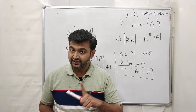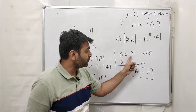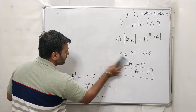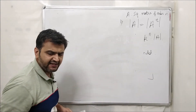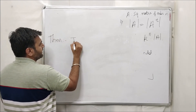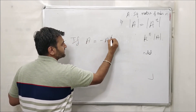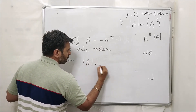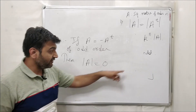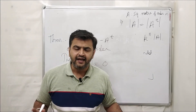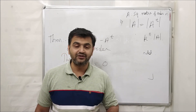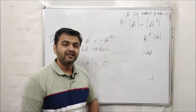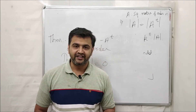This explains the example at the start: it was a skew-symmetric matrix of order 5, which is odd, so its determinant is zero. The theorem states: if A is a skew-symmetric matrix of odd order, then det(A) = 0. So when you see a very big matrix and someone asks for the determinant, just check whether it's skew-symmetric — if yes and it's of odd order, the answer is immediately zero. I hope you understood the lecture; if yes, do not forget to like, share, and subscribe. Thank you.